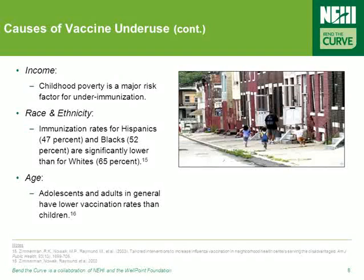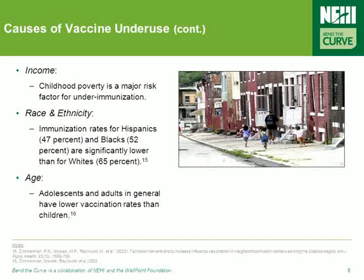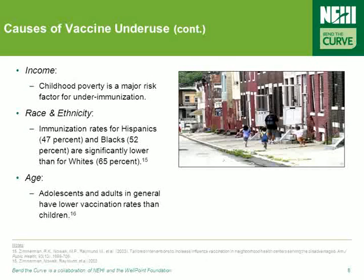Finally, income, race, and age all have an impact on the use of vaccines. Childhood poverty is a major risk factor for underimmunization. Immunization rates for Hispanics and blacks are significantly lower than those of whites, and adolescents and adults have lower vaccination rates than children.